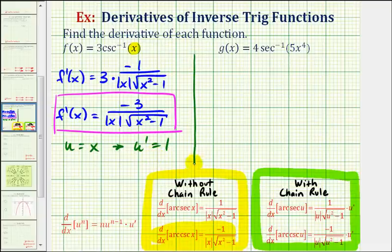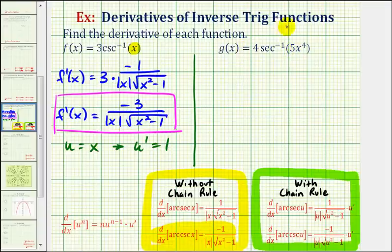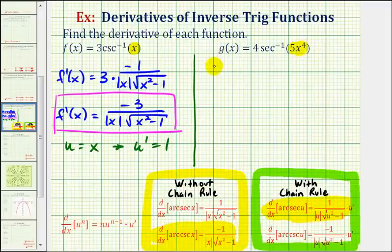Looking at our second function, we have g of x equals four times inverse secant of five x to the fourth, or four times arc secant of five x to the fourth. In this case, we do have a composite function where the inner function would be five x to the fourth. So we do have to apply the chain rule to find our derivative function. We'll let the inner function be equal to u, so u equals five x to the fourth, and u prime, the derivative of the inner function, would be twenty x to the third.